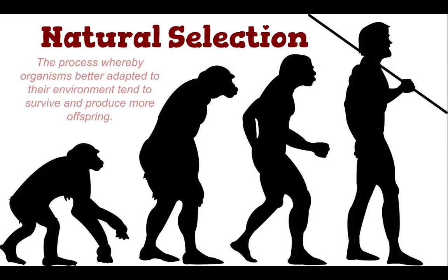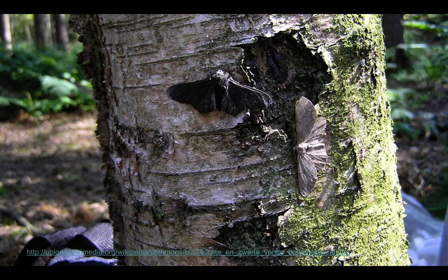Natural selection is a process whereby organisms better adapted to the environment tend to survive and produce more offspring. What this means is that organisms that actually reproduce, or have a higher chance of reproducing, will pass on their favourable traits.